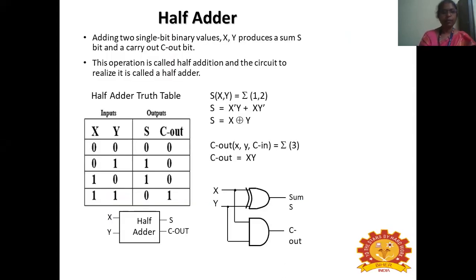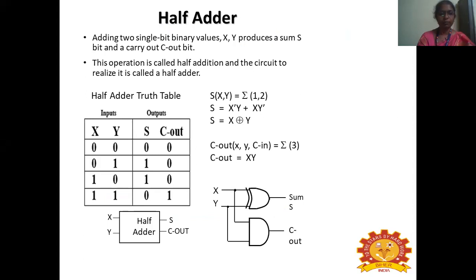Half adder. Adding two single-bit binary values X and Y produces a sum bit and a carry output bit. This operation is called half addition and the circuit to realize it is called a half adder. It can be realized using a simple truth table. The input is two inputs and output is two outputs — X and Y as input, sum and carry as output. Since it is two inputs, the number of combinations is four.